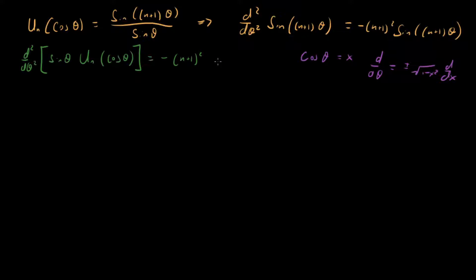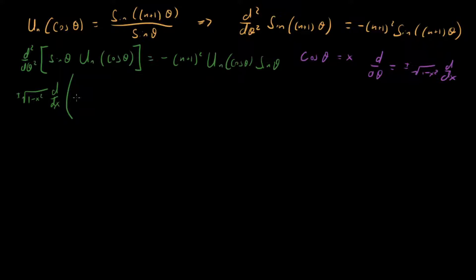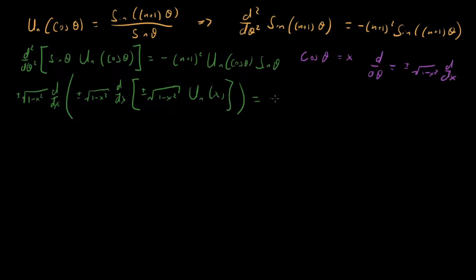The right-hand side should be written as U sub n of cosine theta times sine theta. Now plugging in for x, we're going to have plus-or-minus root one-minus-x-squared d/dx, times the same thing root one-minus-x-squared d/dx, all acting on sine theta — which is plus-or-minus root one-minus-x-squared — times U_n of x. The whole thing equals minus (n+1)-squared times U_n of x, times sine theta — which is also plus-or-minus root one-minus-x-squared.